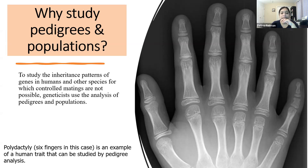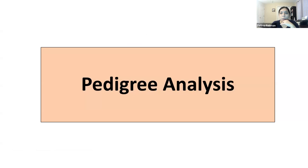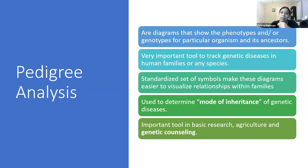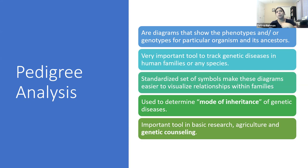Polydactyly — six fingers, or multiple digits — is an example of a human trait that we can study by pedigree. It doesn't have to be a genetic disorder or a disease; it can be just a trait we're interested in studying. Pedigree analysis consists of diagrams that show phenotypes — using just phenotypes or both — for a particular organism and its ancestors. It is a very important tool to track genetic diseases in human families or in any species with a smaller number of progeny. It uses a standardized set of symbols to make these diagrams easy to understand, visualize, and show relationships within different family members, and it is used to determine mode of inheritance and genetic disease.